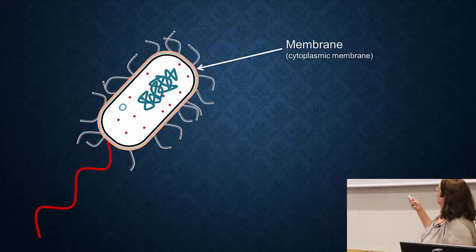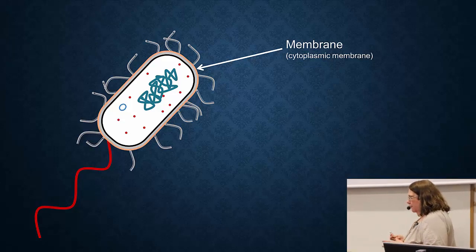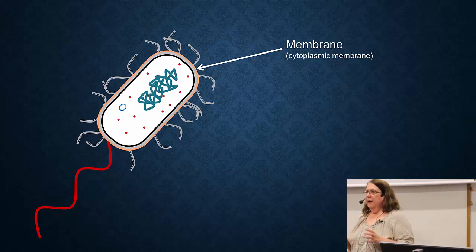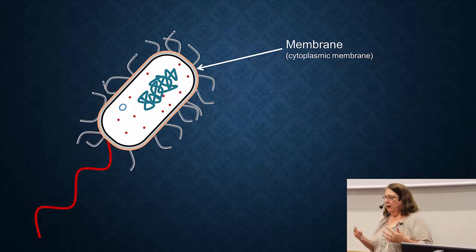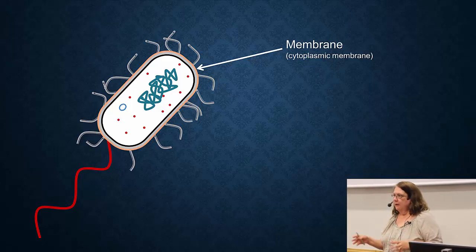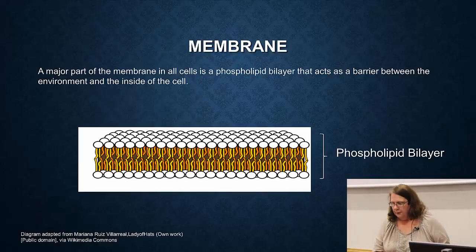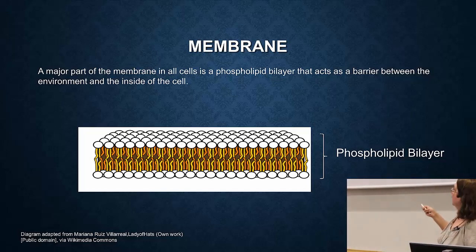The first thing to point out is the membrane, also called the cytoplasmic membrane. The membrane is what keeps a bacteria or any cell separate from the rest of the world. All of your cells are surrounded by membranes — you can think of them as a balloon around the cell. I'm going to spend quite a bit of time on this because it's very important with antibiotic resistance. The membrane is made up of a phospholipid bilayer, and it acts as a barrier between the environment and the inside of the cell.